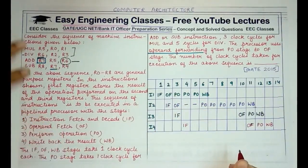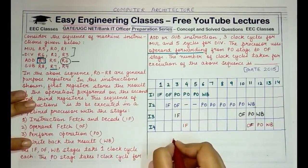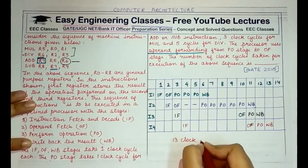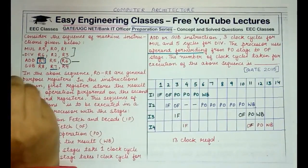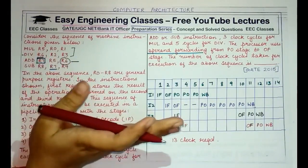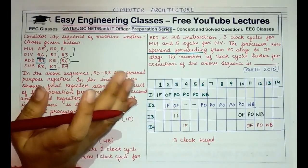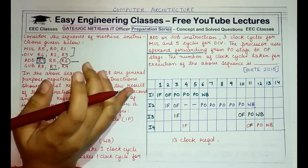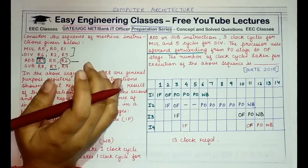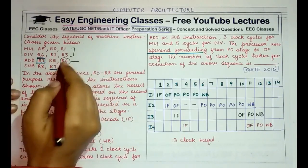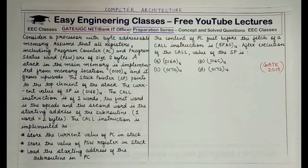All four instructions execute in a total of 13 clock cycles. Operand forwarding is clearly demonstrated: if the execution of the next instruction depends on the result of the previous instruction, the resulting data is directly put or copied to the required register of the next instruction.